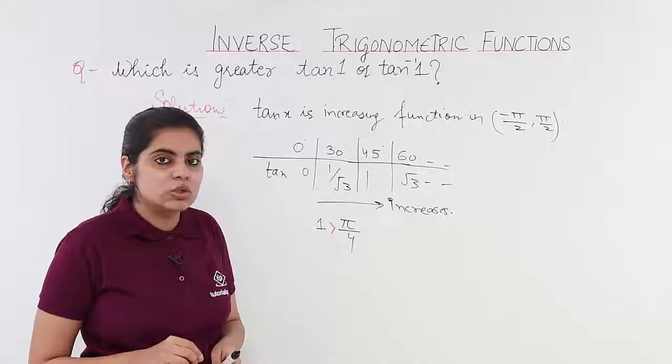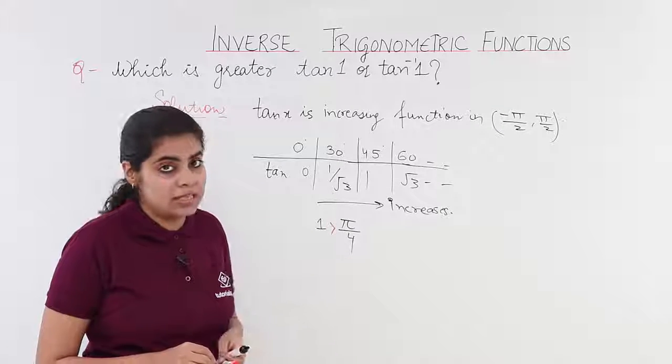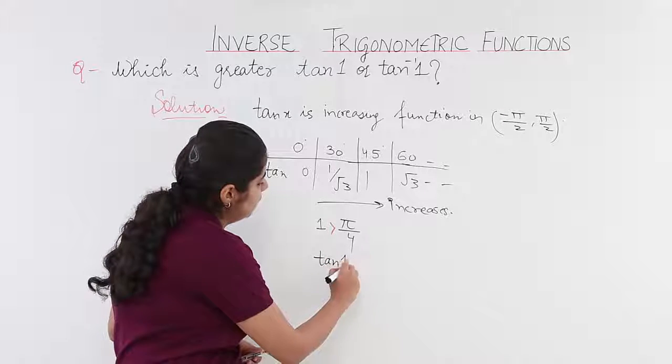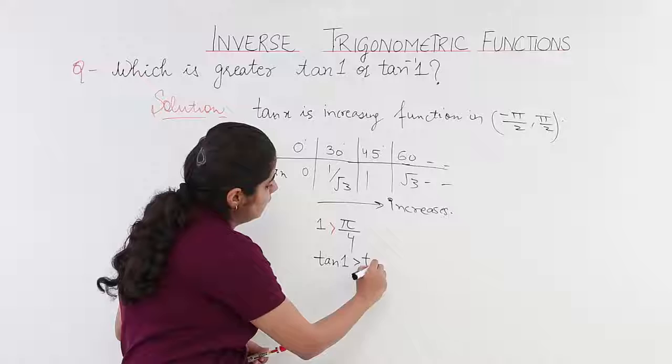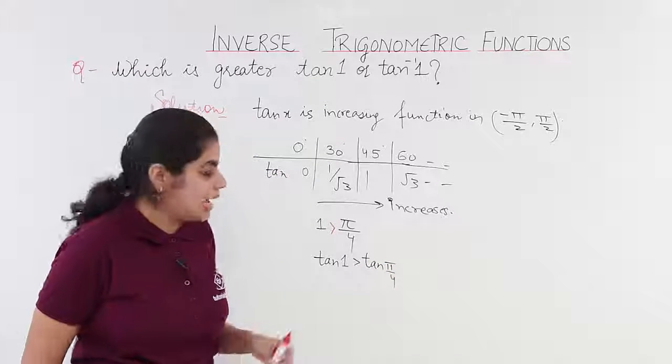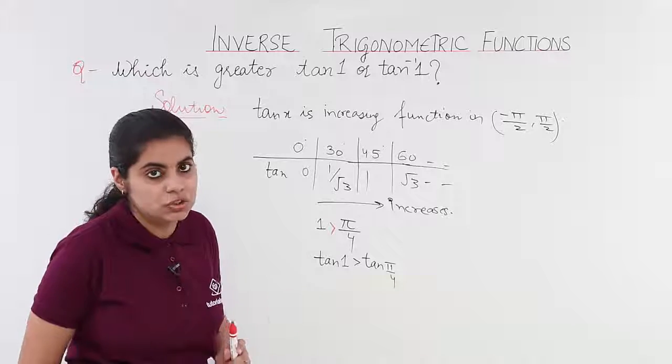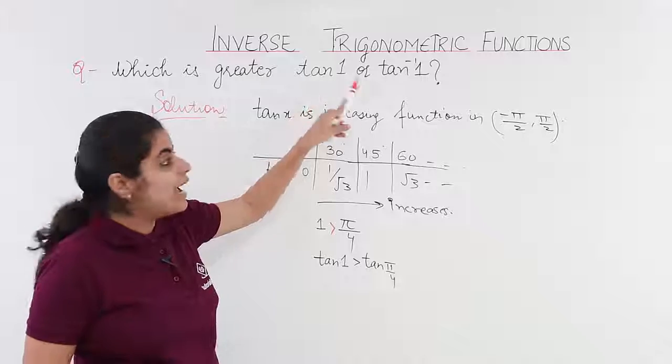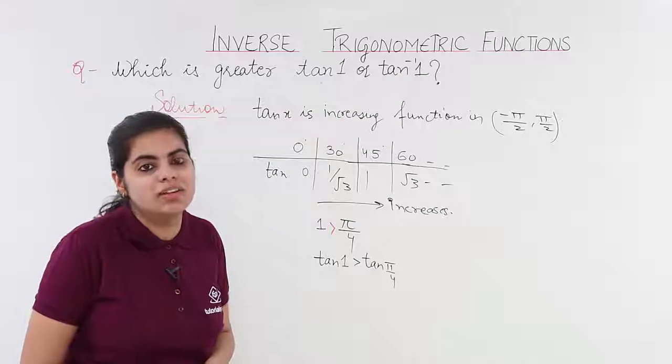Right? Also, if I take tan both sides, so my question changes to what? It is tan 1 greater than tan pi by 4. So, I have tan 1 and tan pi by 4 relation. The question was what? The question was tan 1 and tan inverse 1 relation.